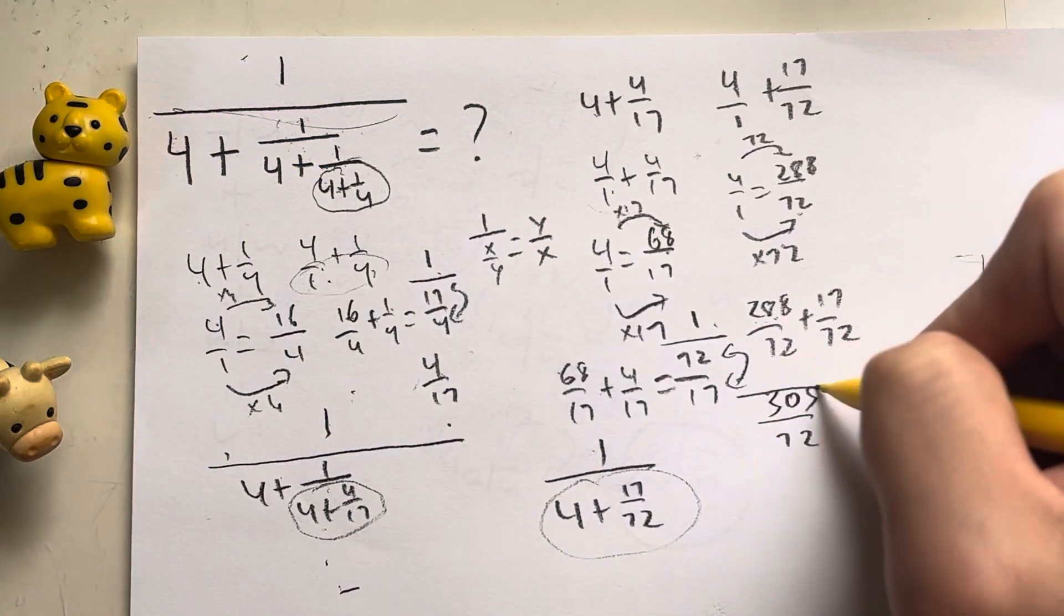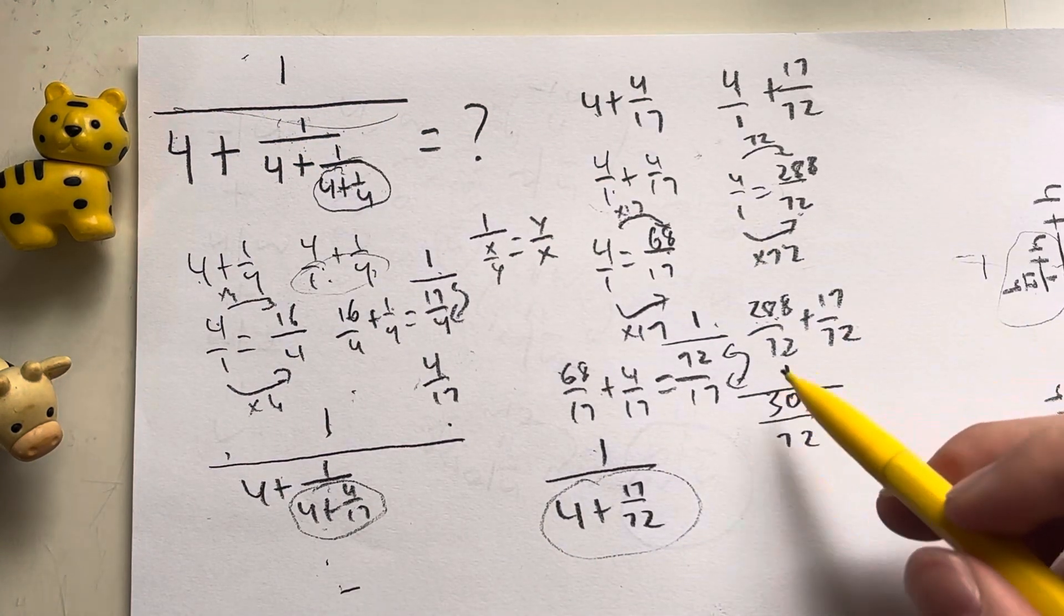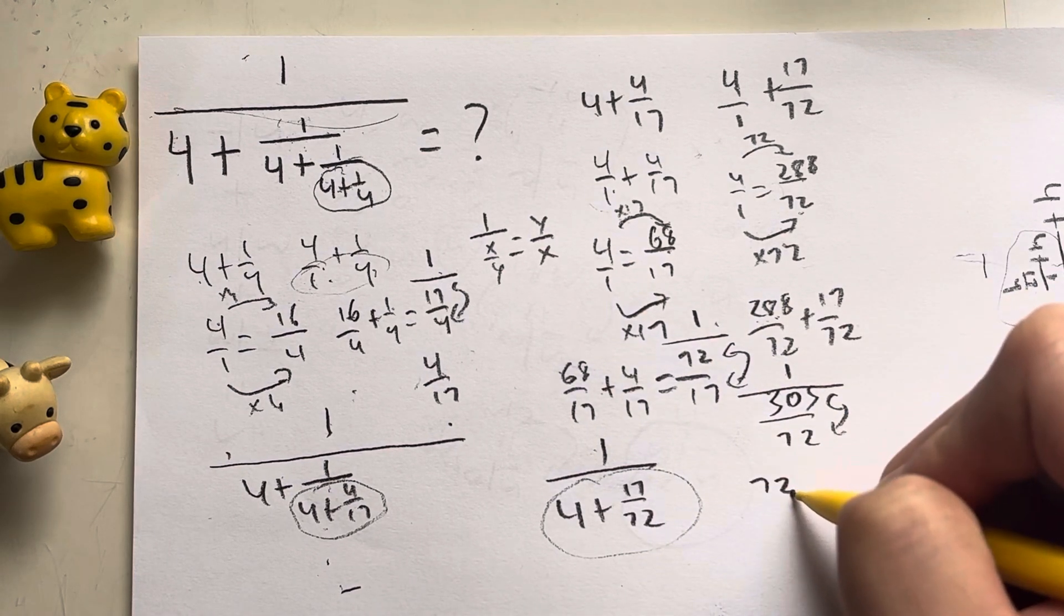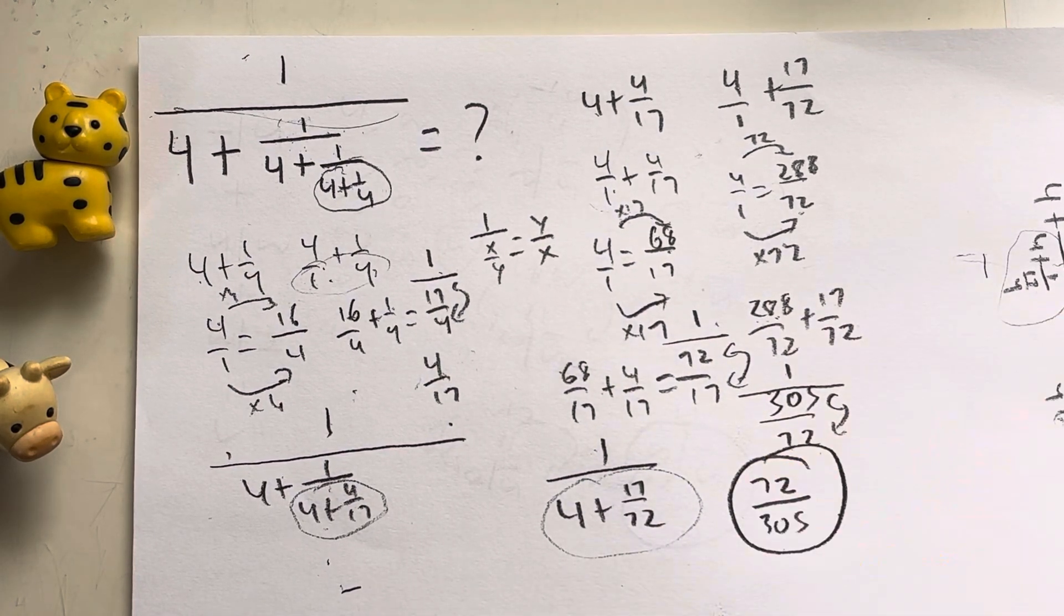This entire thing is over this big one right here. Remember, same rule as before. When you have that, all you have to do is flip it, which finally will give you your answer of 72 over 305.